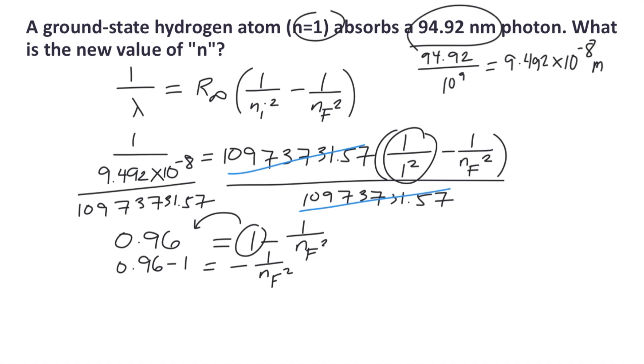0.96 minus 1 equals negative 0.04, which equals negative 1 over nf squared. Both sides are negatives, so cancel the negatives. Our equation is 0.04 equals 1 over nf squared.